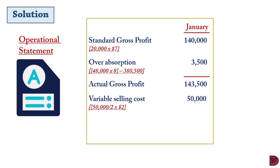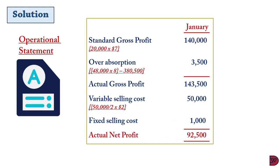For the variable selling cost, we take fifty thousand budgeted hours divided by two hours per service to get the actual number of services — twenty-five thousand services multiplied by two dollars gives fifty thousand dollars. Fixed service cost is one thousand dollars. The actual net profit for January is ninety-two thousand five hundred dollars.